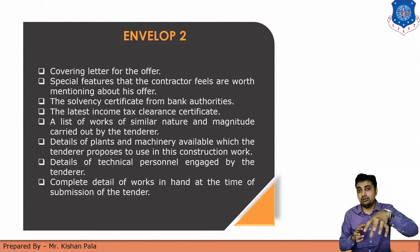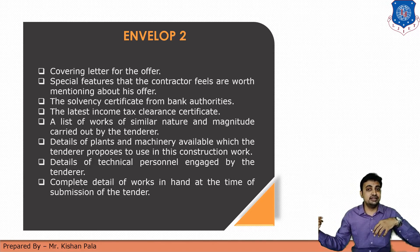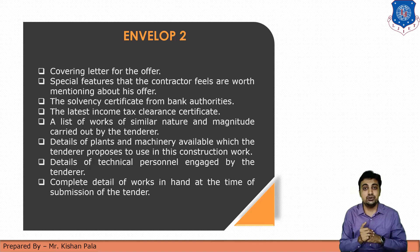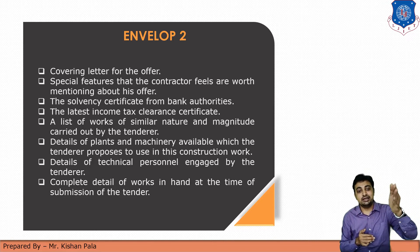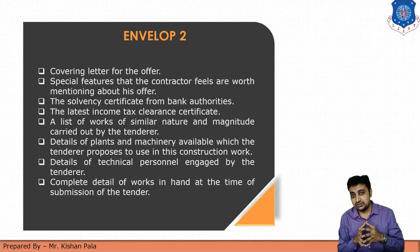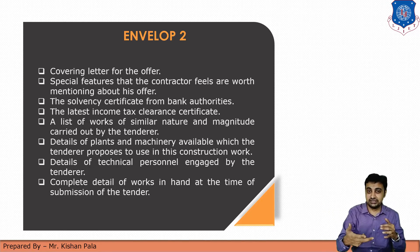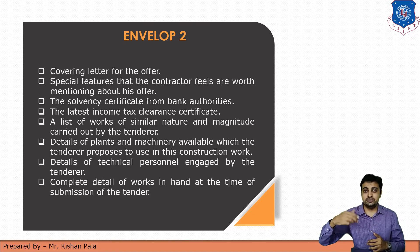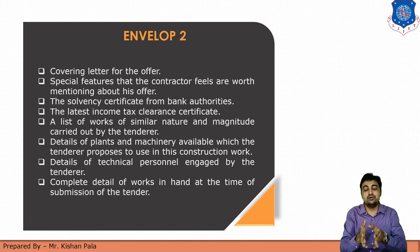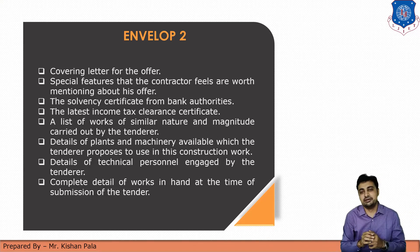Envelope 2 should also include the list of work of a similar nature and magnitude carried out by the tenderer, so the client can judge that the contractor has maintained quality and is capable to do that work. Additionally, there should be details of the plants and machinery available, confirming the contractor has the facility regarding machinery to do the work smoothly within the time duration. There should also be the complete detail of the work in hand at the time of submission of the tender.